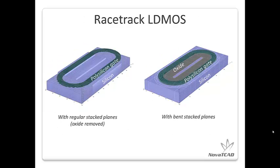This is the racetrack LDMOS model. This time we removed the oxide to reveal the polysilicon layer. Though quite few planes are used to construct the curved area of the polysilicon gate, the shape is still not very smooth using the straight method. Taper connect can be applied to make the curved area smoother, but we intentionally neglect it for better comparison. The structure on the right-hand side built by bent planes requires many fewer mesh points and achieves a smoother look.